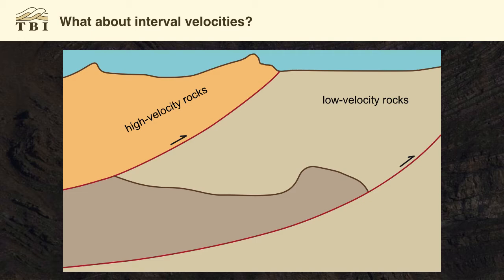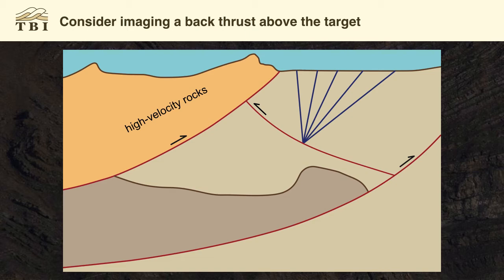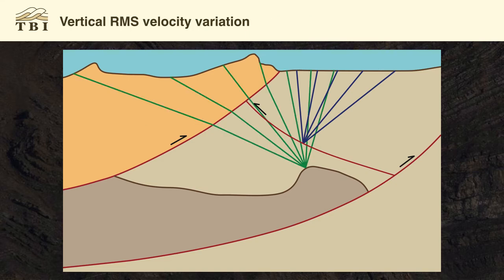Let's think about the vertical effects and interval velocities. The interval velocity calculation is based on the assumption of a horizontal reflector beneath a homogeneous overburden, and that assumption is violated here. If we consider imaging a back thrust above the target, just like in the previous example, the rays that illuminate this structure all pass through the low velocity material, so we're just going to see a low RMS velocity down to that reflector. One hundred milliseconds below that, if we're imaging the back crest of this structure, those rays will pass through the overthrust and we'll see a higher average RMS velocity to that imaging point.